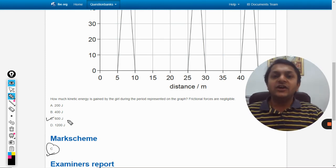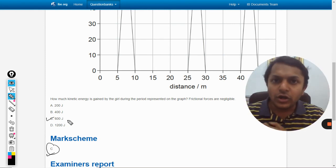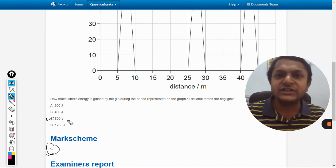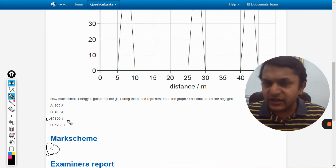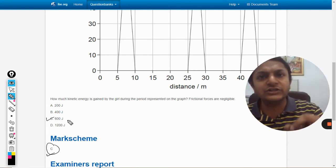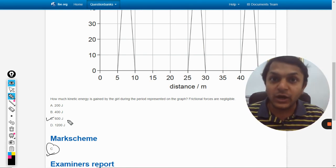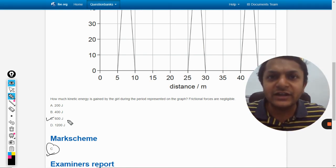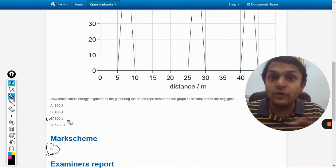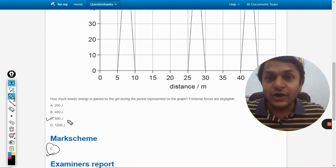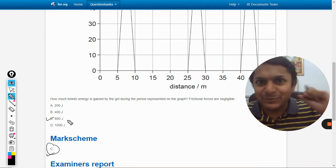I believe with this the concept will be very clear. Whenever we have a graph, always first of all try to understand which is the physical quantity represented by the area under the curve. And if the question is asking the same physical quantity, you just need to find the area under the curve with simple algebra. There is no further science here. All the best, bye.